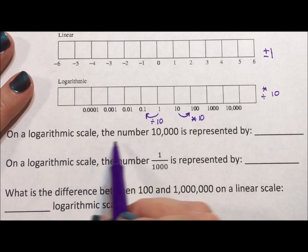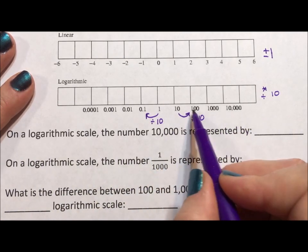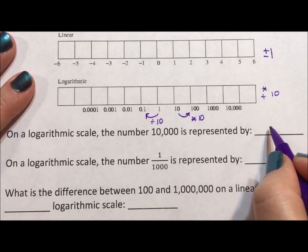On a logarithmic scale, the number 10,000 is represented by 1, 2, 3, 4. It's the number of zeros.